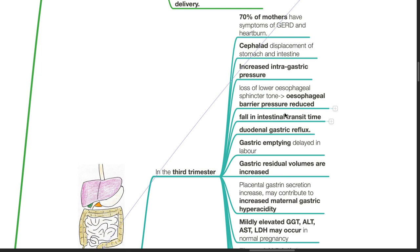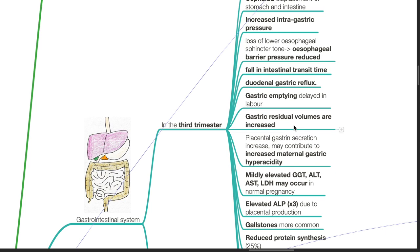There is a fall in intestinal transit time. Duodenal gastric reflux occurs. Gastric emptying is delayed in labor. Gastric residual volumes are increased. Placental gastrin secretion increases and may contribute to increased maternal gastric hyperacidity.